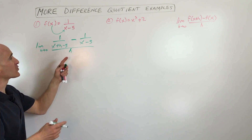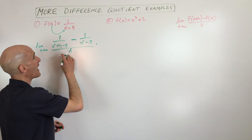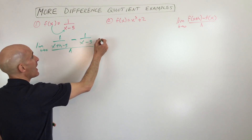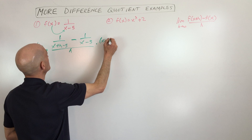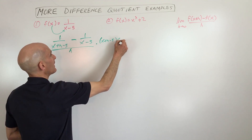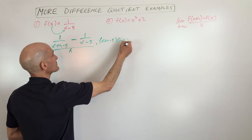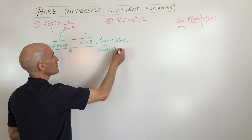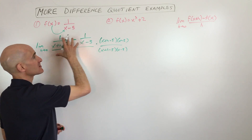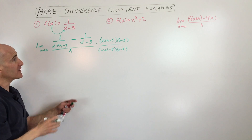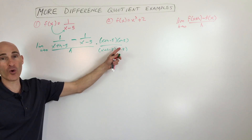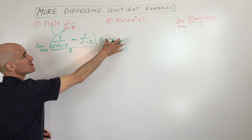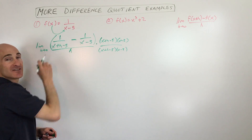So what we're going to do is we're going to multiply by the common denominator. We're going to multiply by (x plus h minus 5) and (x minus 5). But whatever we do to the numerator, we want to do to the denominator, because we want to keep this equivalent. This is like multiplying by the number 1.